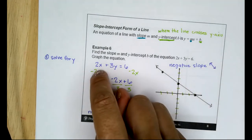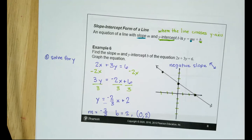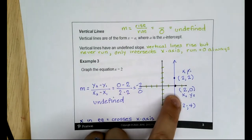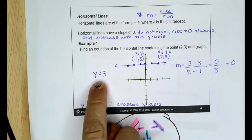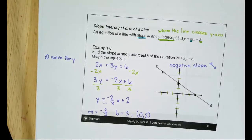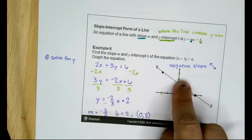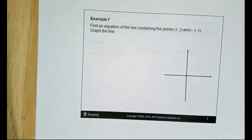A useful rule: if an equation has only x, it crosses the x-axis (vertical line). If it has only y, it crosses the y-axis (horizontal line). If it has both x and y, it's at an angle and crosses both axes. So x = 3 crosses the x-axis.